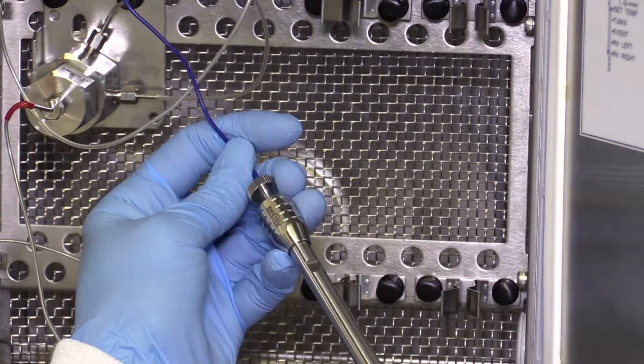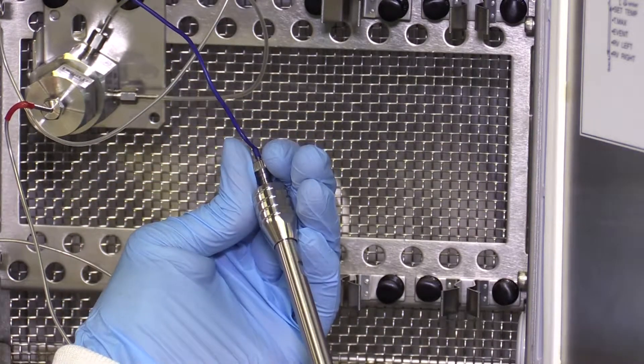So when tightened, the ferrule securely grips the tubing without permanently attaching, so it can be reused multiple times without compromising the seal.